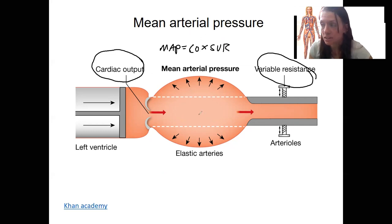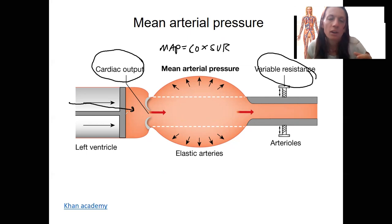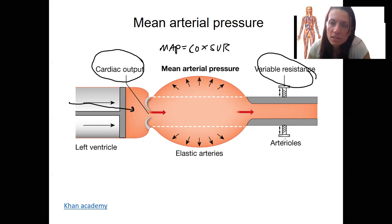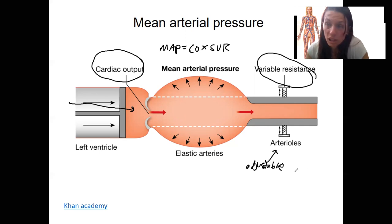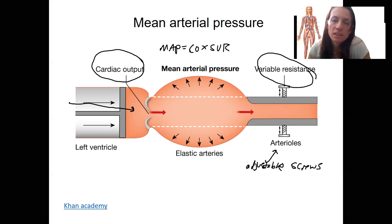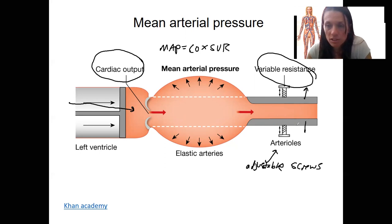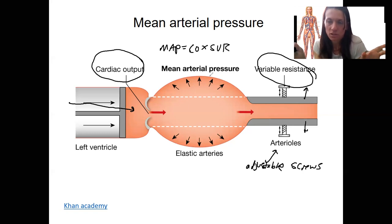As arterial volume increases, pressure increases, as shown here. In this image, the ventricle is represented by a syringe pushing pressure into elastic arteries — the heart acting as a pump. The variable resistance is represented by adjustable screws, which represent the adjustable level of peripheral resistance. You can imagine: if you decrease this resistance, pressure decreases. If you decrease cardiac output, you also decrease mean arterial pressure. This is one way of visualizing the two factors that go into MAP.